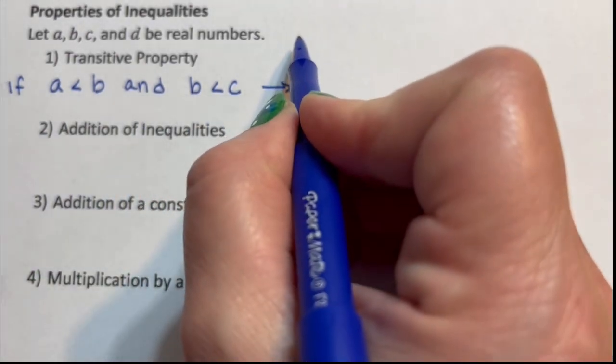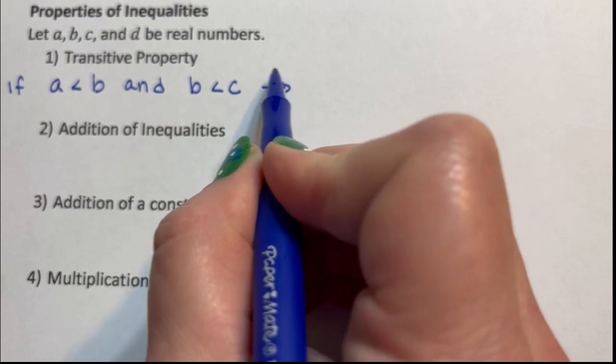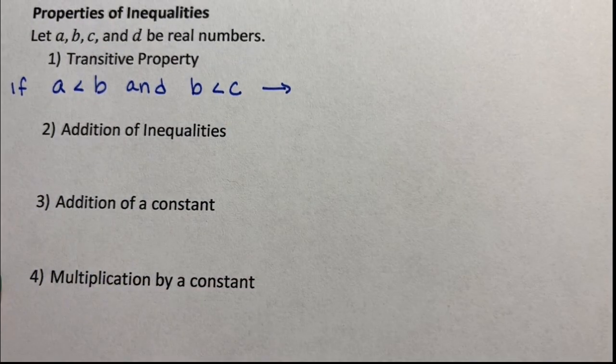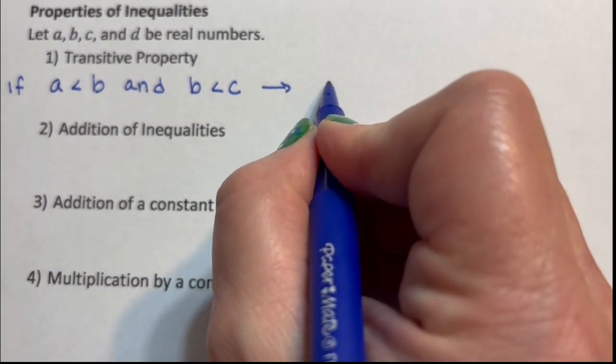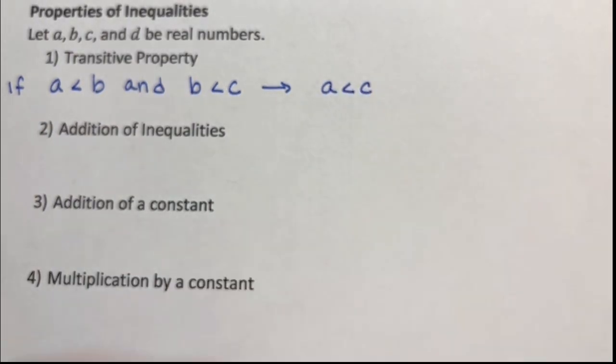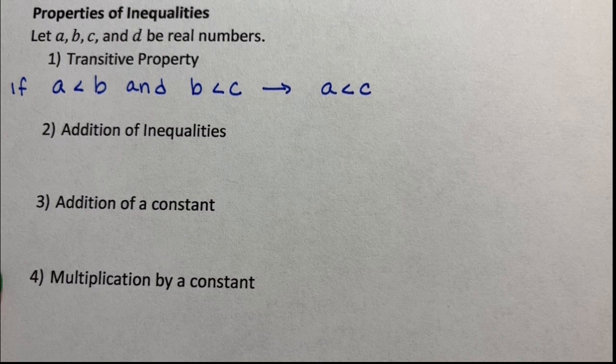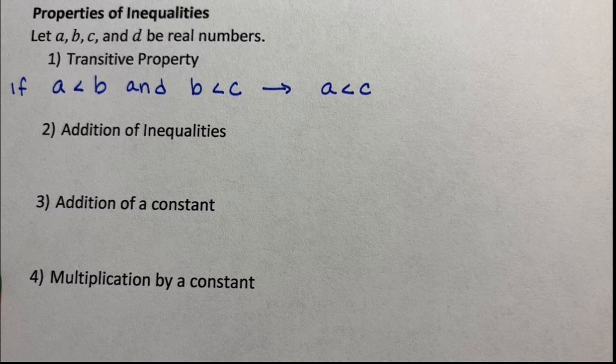just for notation in math, I don't use a lot of math symbols, but I do love the fact that that arrow means then, then A is less than C. Cut out that middle B. So if A is less than B, and B is less than C, then A is less than C.